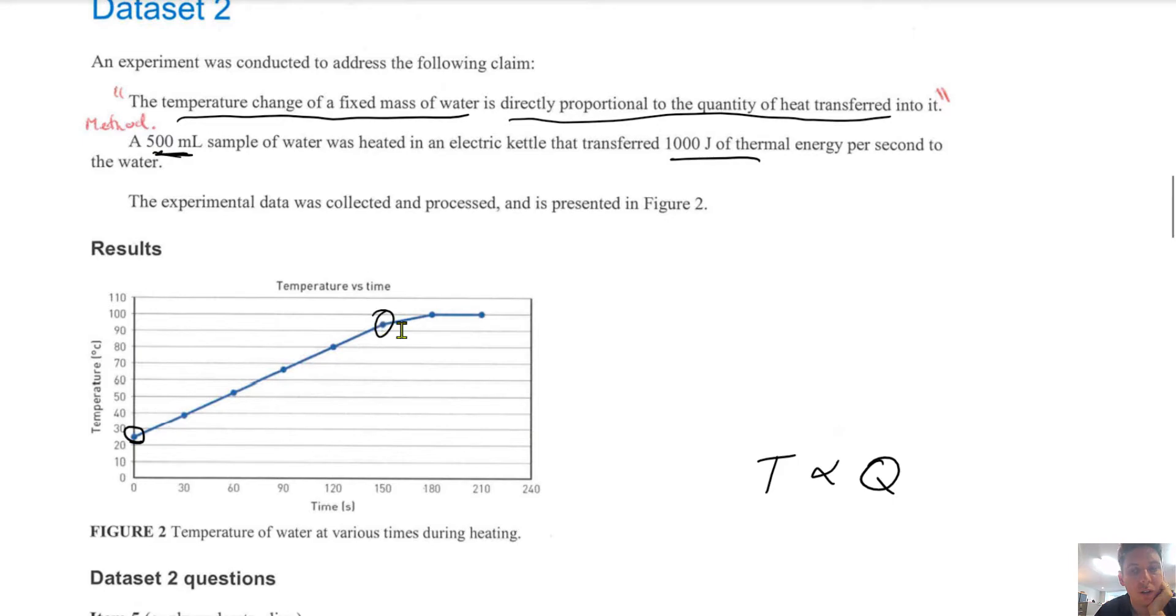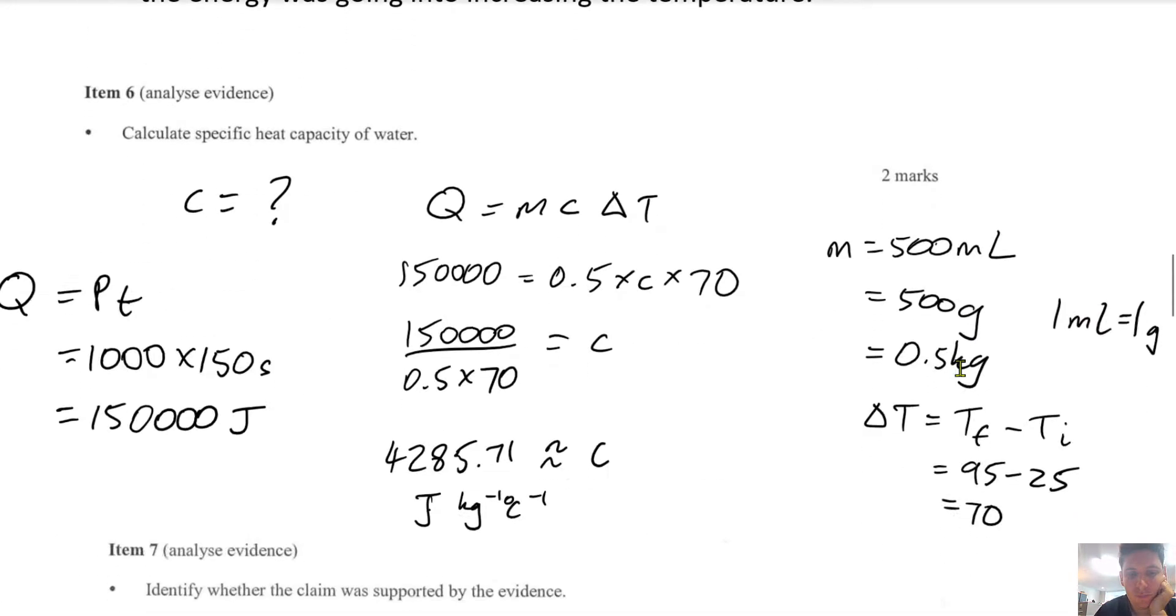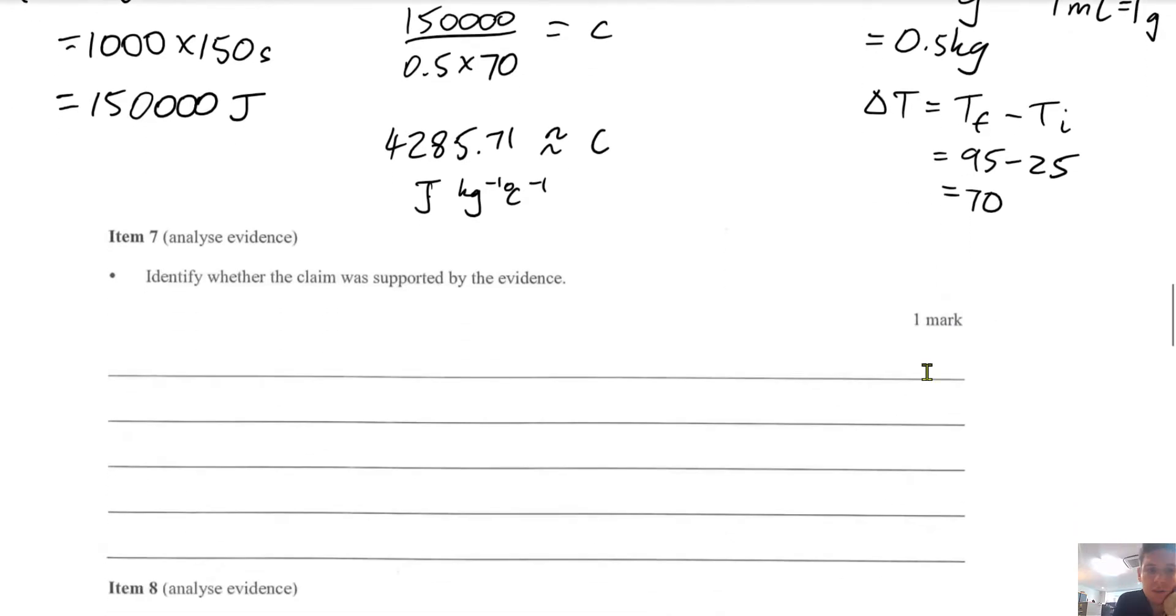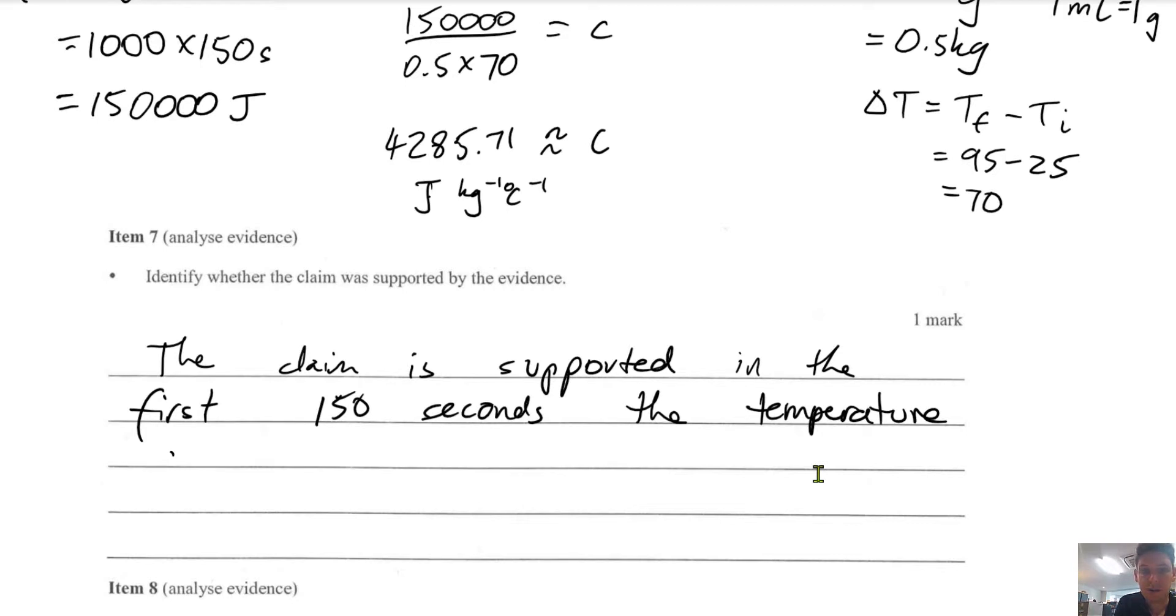So each second there was more Q in the system. So the claim is supported in the first 150 seconds. This means the temperature and energy increased in a linear trend.